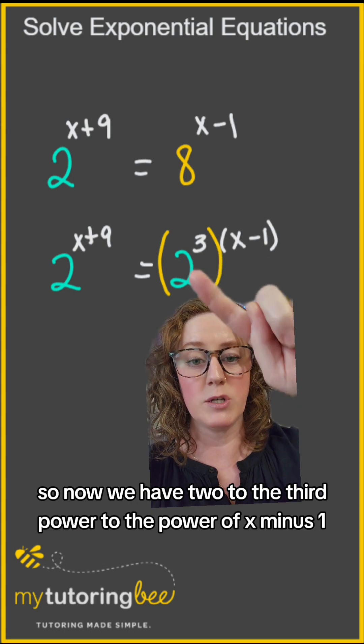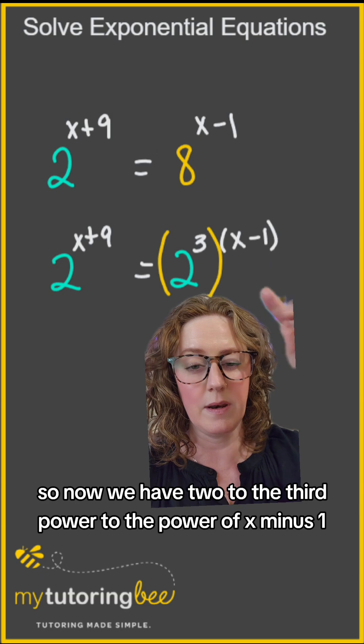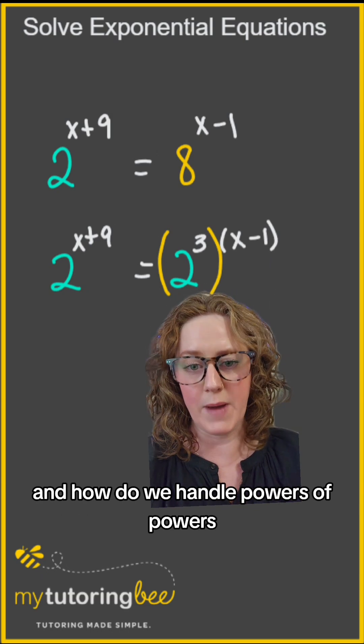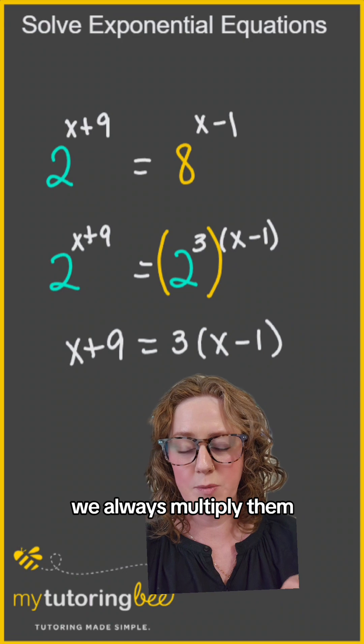So now we have 2 to the third power to the power of x minus 1. And how do we handle powers of powers? We always multiply them.